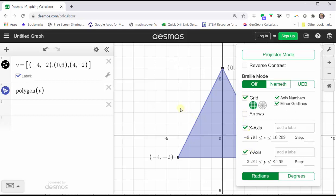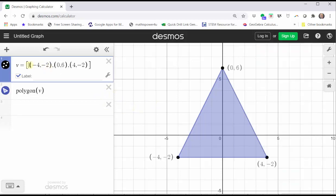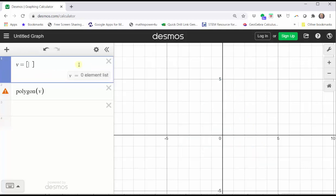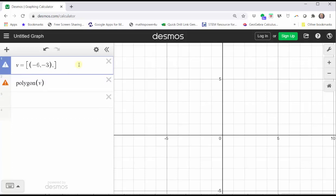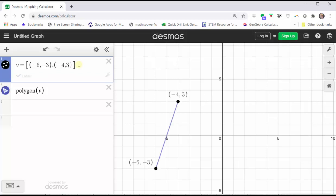And sketch our second polygon. So we'll go back to list V and we'll clear out these ordered pairs and enter the vertices for the pentagon, which are negative six comma negative three and negative four comma three.